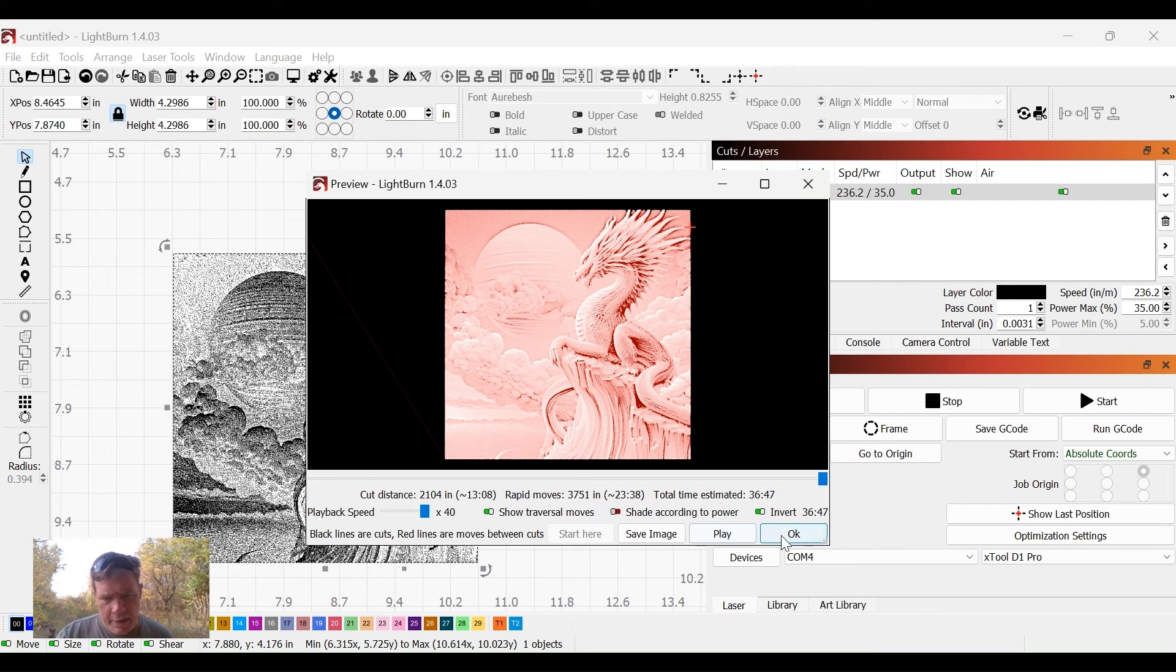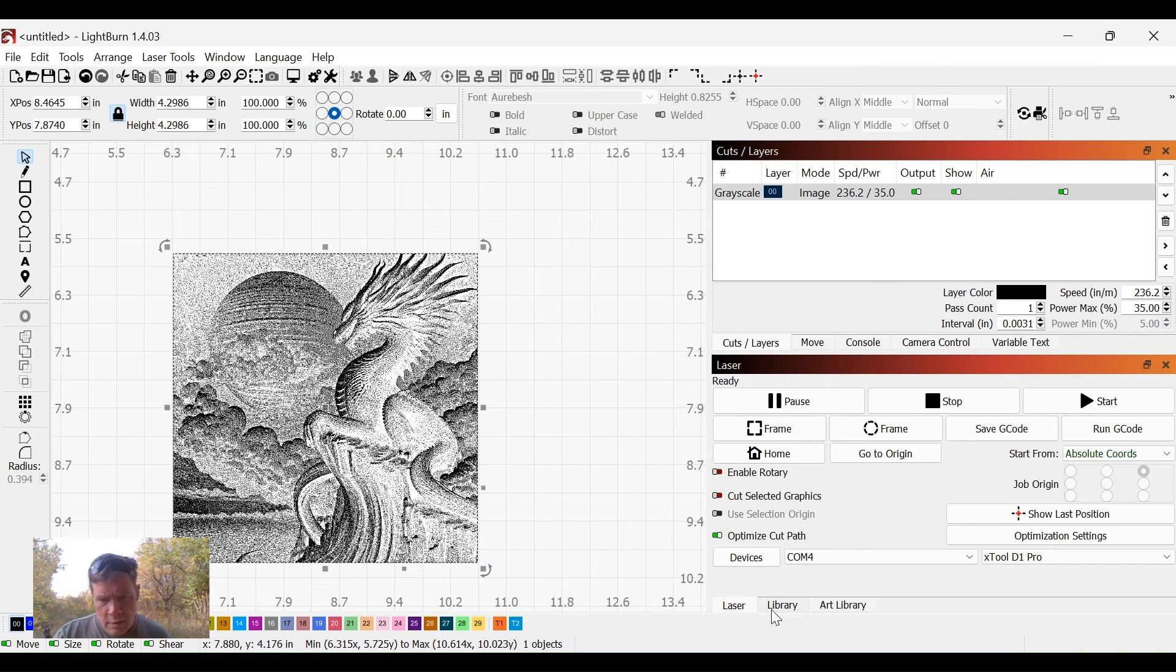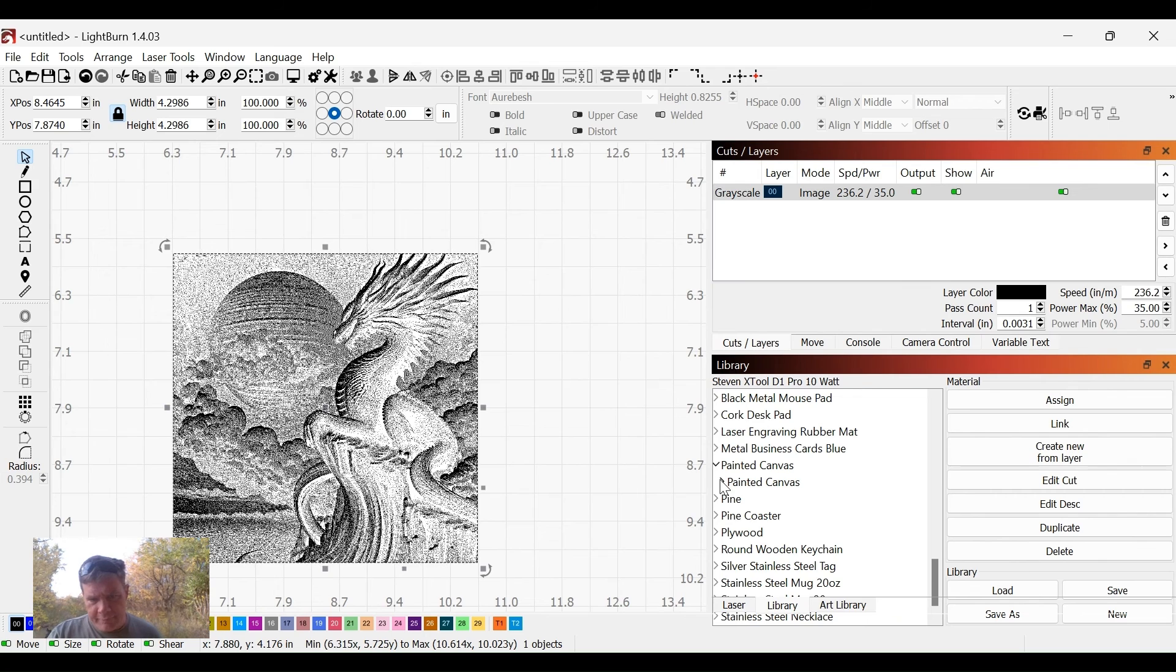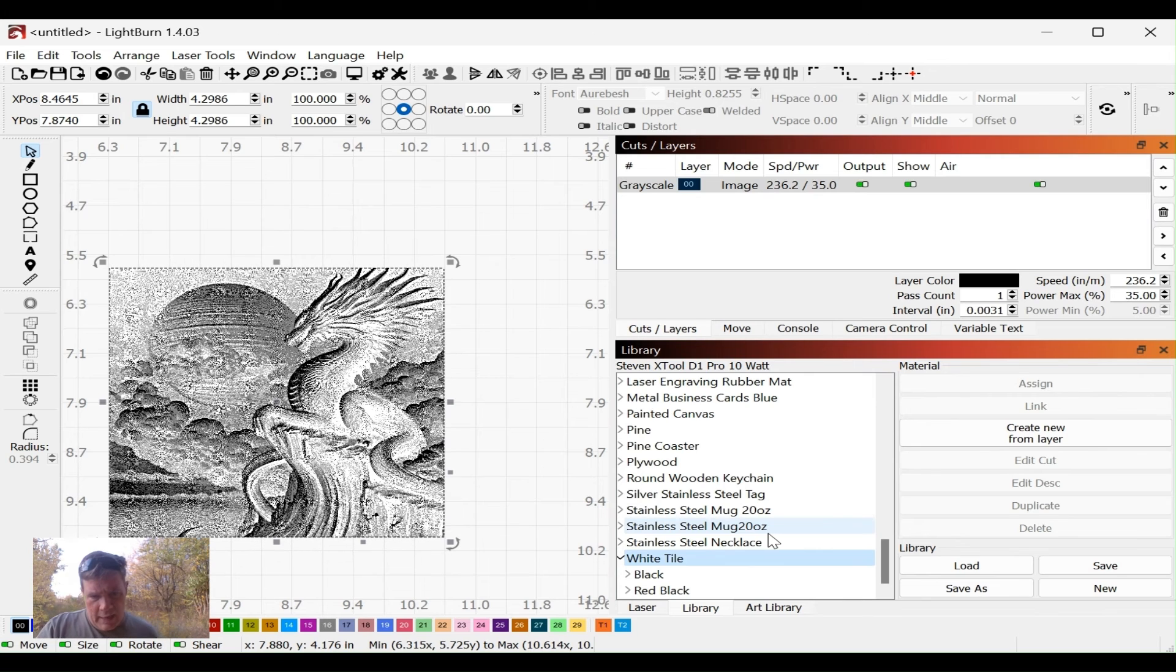The next thing I want to do is come over here to my library. We did some painted canvas yesterday, we're not interested in that. We're going to go to white tile down here at the bottom. It's not going to let me click it, so we will just minimize our screen. I can see it now, so we're going to click on white tile. I do have a couple of our presets already loaded.